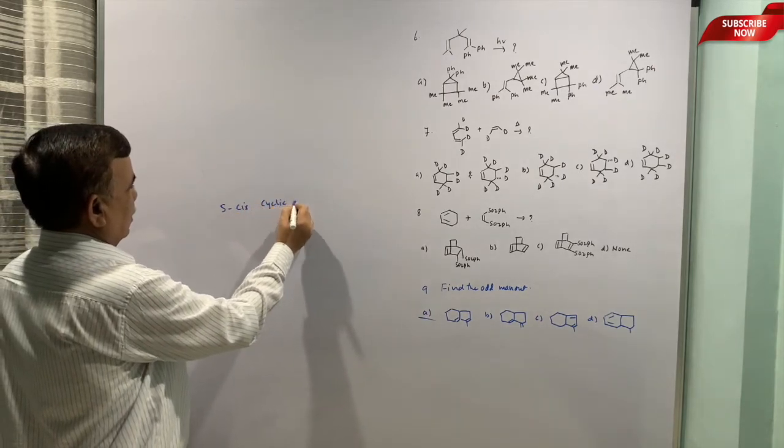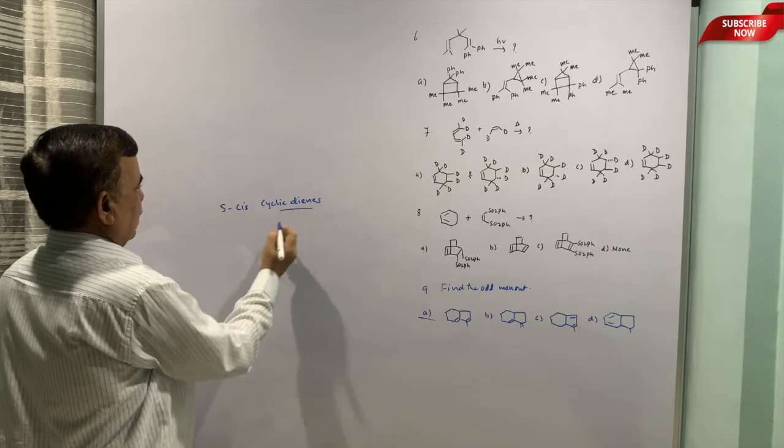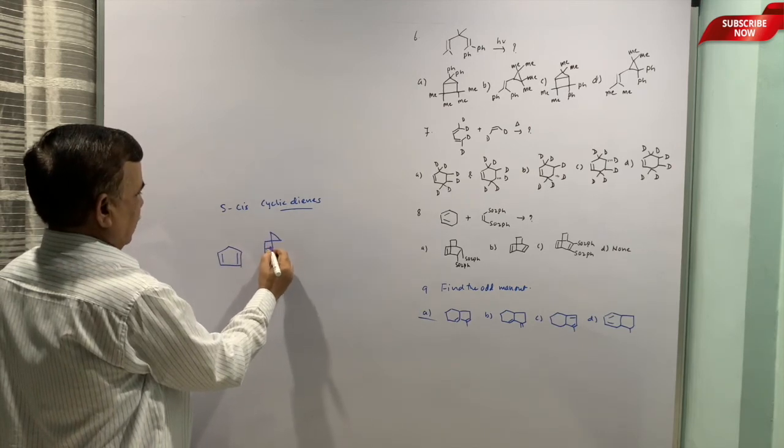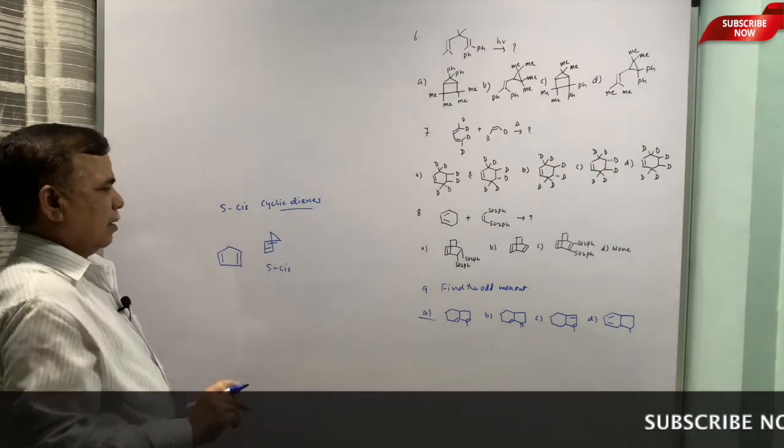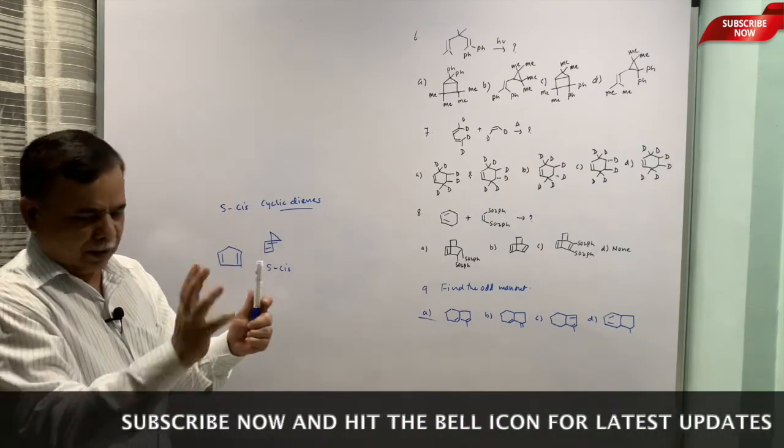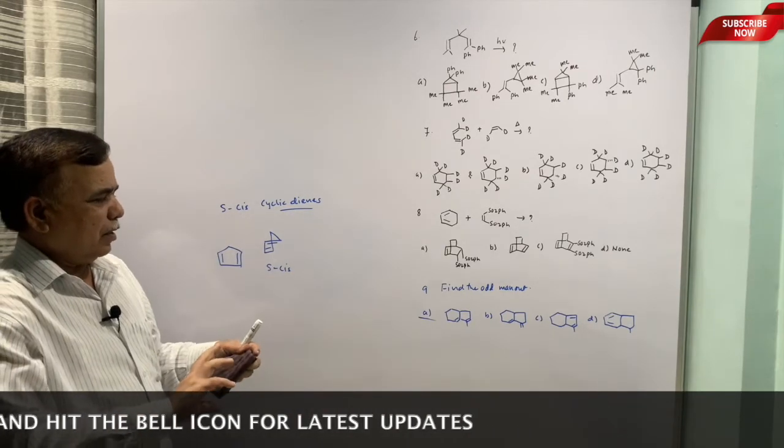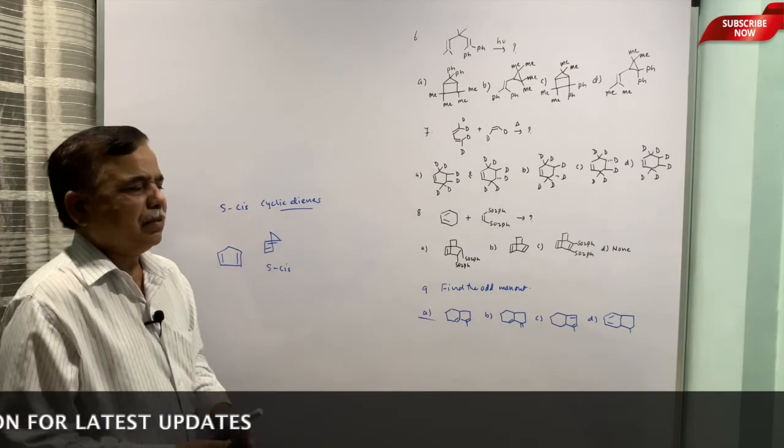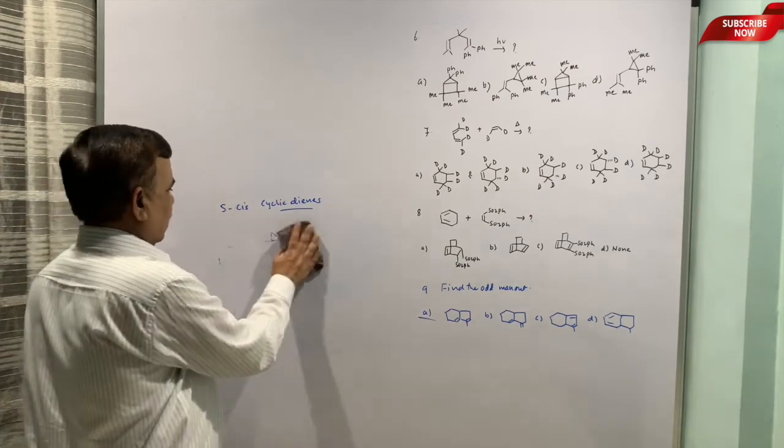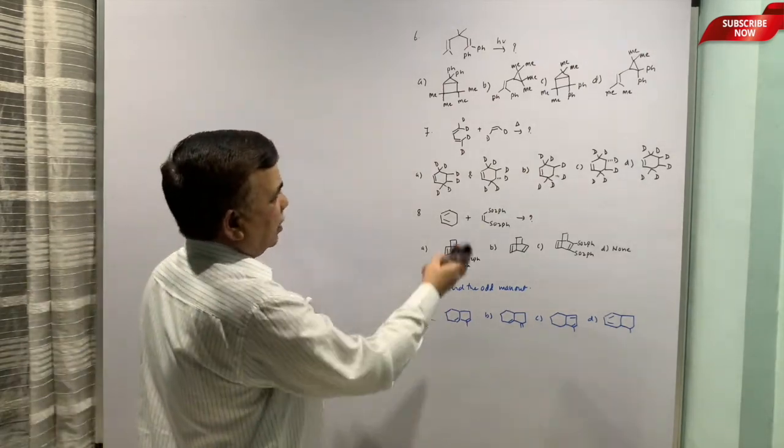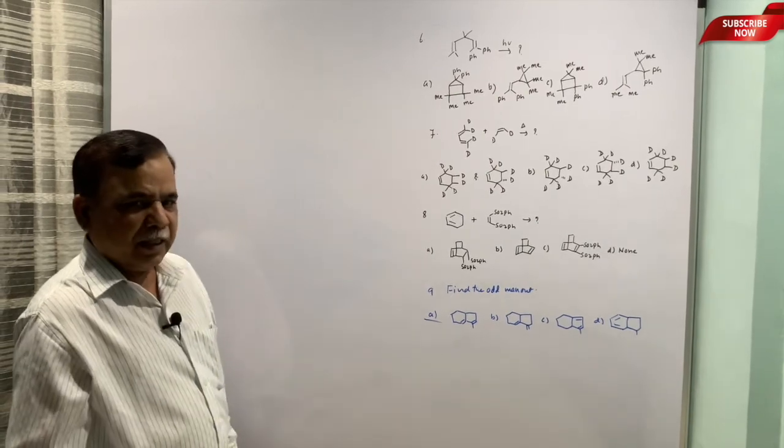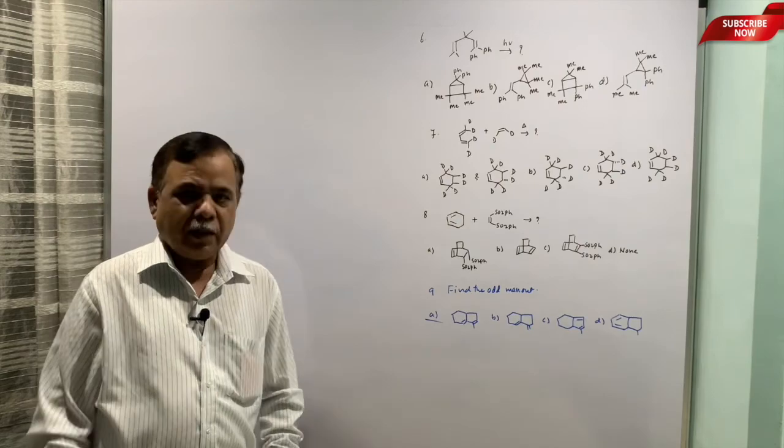Trans is not going to react because s-cis is what is required. For cyclic dienes this is important because in cyclic dienes, the moment I draw this cyclopentadiene, this has to be in the form of s-cis. Now this is s-cis. In this case that is not possible because trans is there and in the rigid system you cannot have this kind of twisting of the bond because otherwise this ring will break and there won't be any product. So s-cis is not possible in first, so it will not undergo Diels-Alder reaction. So that is the odd man to be identified in this case. Okay, thank you very much.